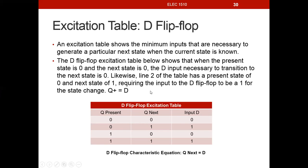For the D flip-flop excitation table, we always show Q in the present state, Q in the next state, and then determine what we want the input to be on D. Because the characteristic equation is Q+ equals D, the present state Q does not affect Q in the next state. The input D is simply derived from the Q next column. When we want our next state to be a 0, our input on D must be a 0. When we want our next state to be a 1, the input on D must be a 1. It doesn't matter what Q present is — D will always equal Q next.